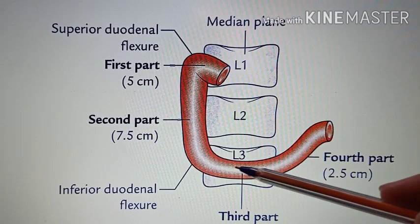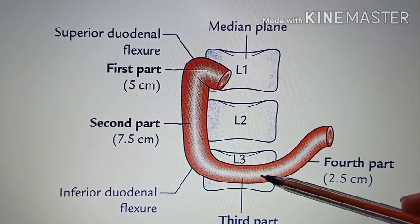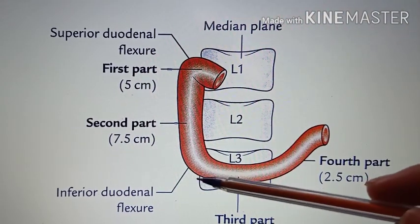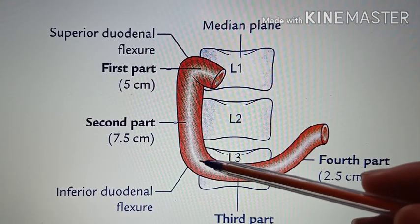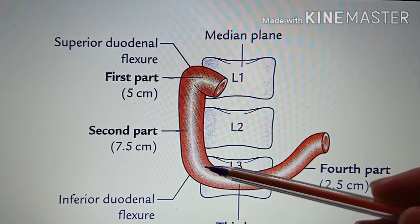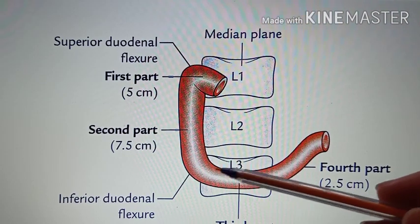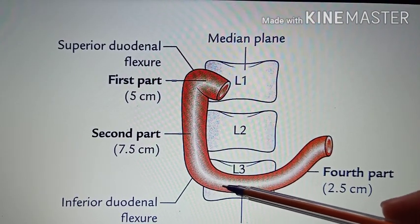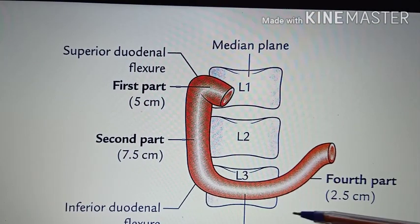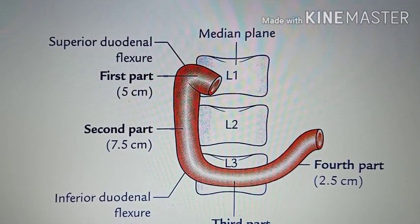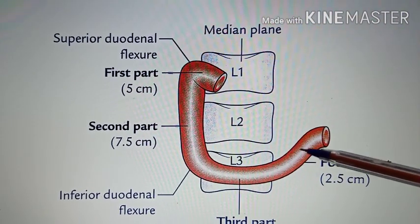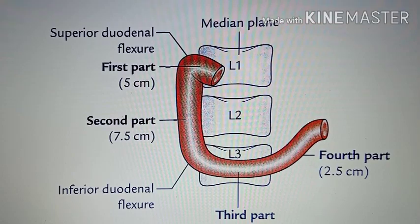The third part of the duodenum begins at the inferior duodenal flexure on the right side of the lower border of the third lumbar vertebra. Then it runs horizontally to the left and crosses in front of the inferior vena cava, and ends by joining the fourth part in front of the abdominal aorta.